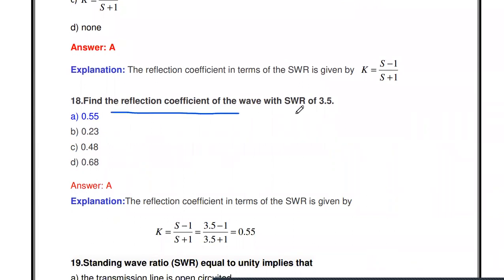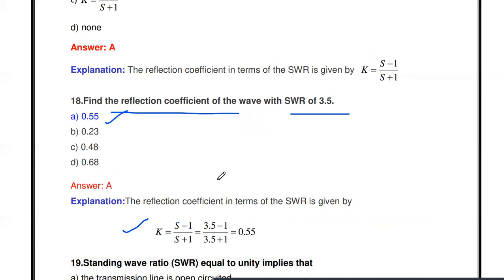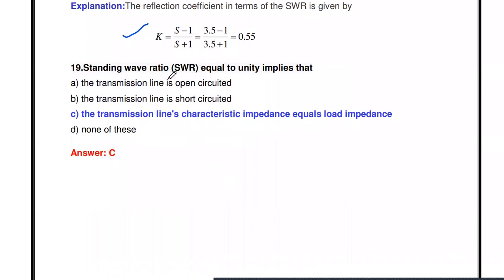Find the reflection coefficient if SWR = 3.5. Using k = (S − 1) / (S + 1) = (3.5 − 1) / (3.5 + 1) = 2.5 / 4.5 = 0.55. The reflection coefficient is 0.55.